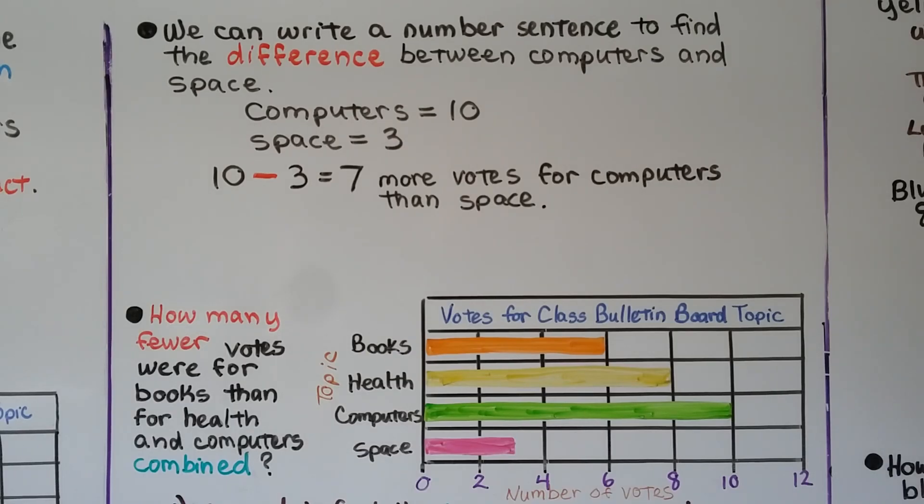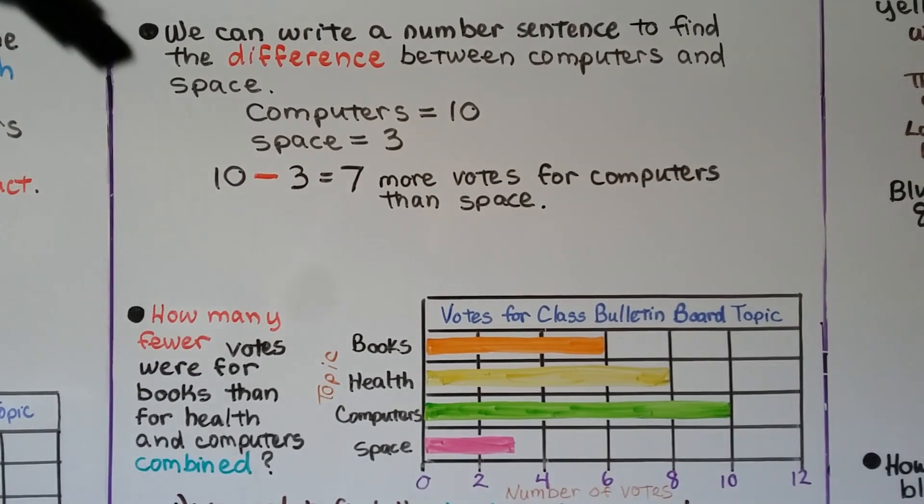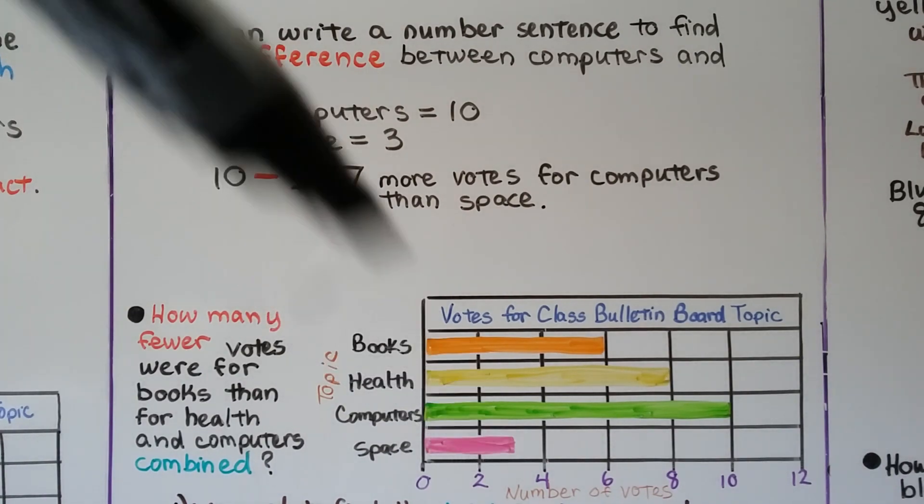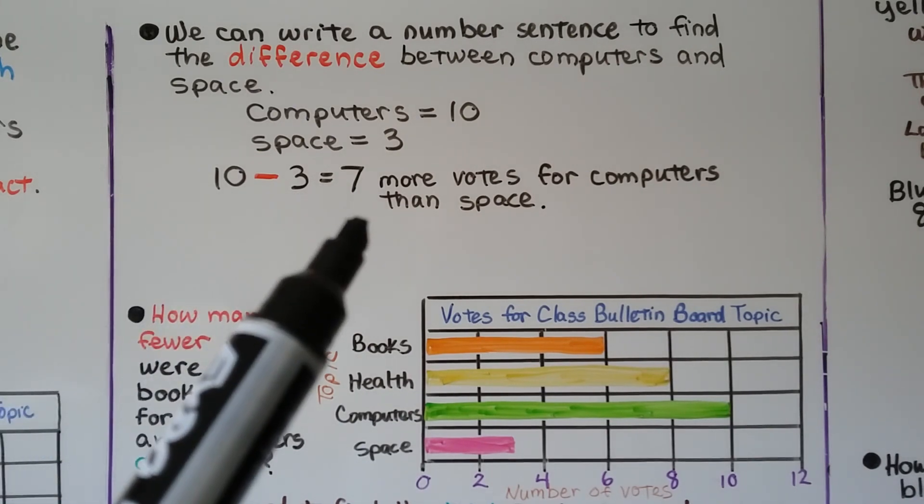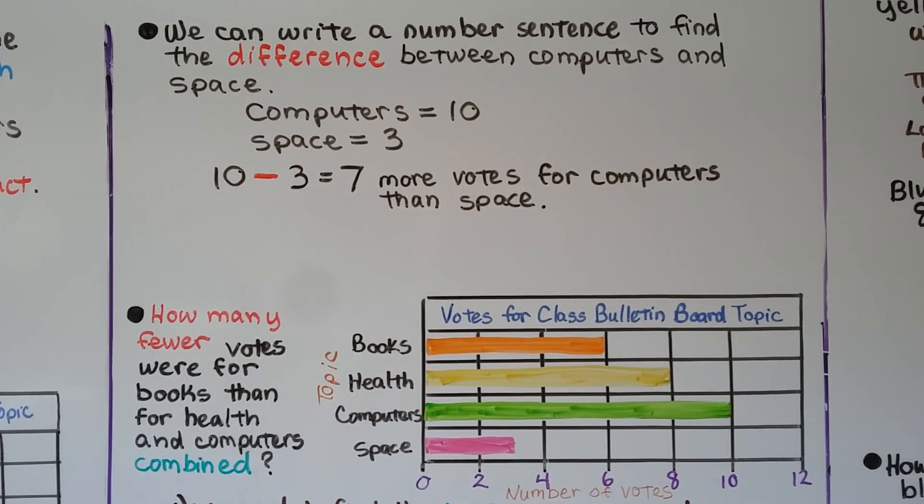We could also write a number sentence to find the difference between computers and space. Computers is ten, and space is three. We can do 10 - 3 = 7, so we know seven more votes were for computers than space.